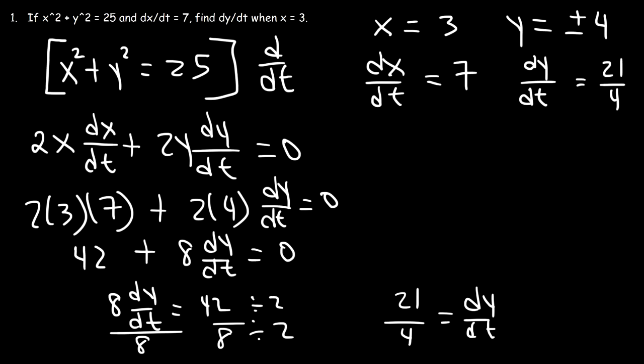Now, I almost made one little mistake, and when I move the 42 from the left to the right, it should now be negative 42. So this is negative 21 over 4, when y is positive 4.